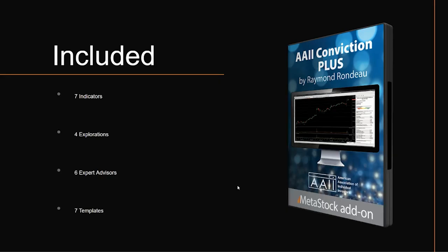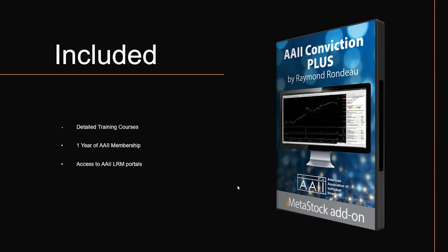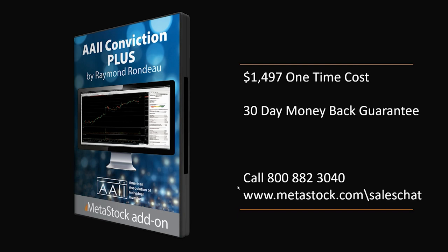As part of the AAII Conviction Plus, you're going to get seven indicators, a total of four explorations, six expert advisors, and seven templates. In addition to that, you'll get detailed training courses, access to the AAII Learning Resource Management portals, and one year of AAII membership. All of this is available as a one-time cost of $1,497, backed by our 30-day money back guarantee. That means you can evaluate it, and if it's something you like, you can keep it. If you don't feel it's going to be helpful for you, you get a full refund.